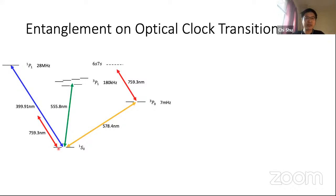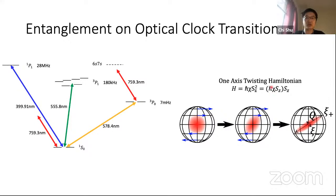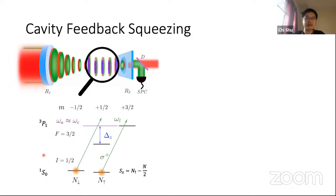We previously showed spin squeezing on the ground-state manifold. By using optical π-pulses to transfer the squeezed state to the clock state and back, we can perform entanglement-enhanced measurements on the optical clock transition and detect on the ground state where we have good measurement resolution. We engineer the squeezing Hamiltonian — a one-axis twisting Hamiltonian of the form χS_z² — using a high-finesse optical cavity. A laser parked off-resonance from a cavity mode generates an AC Stark shift that depends on the number of atoms on the coupled transition.